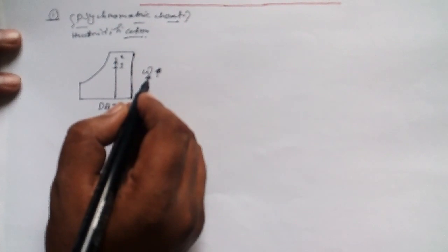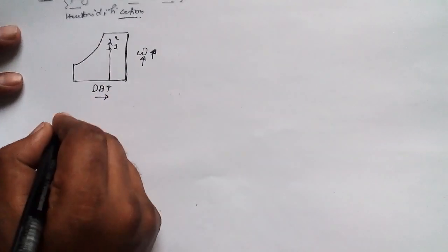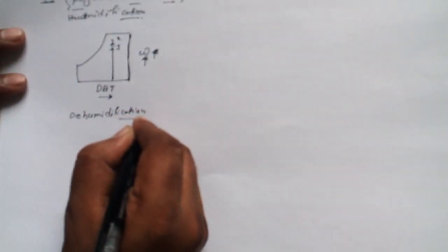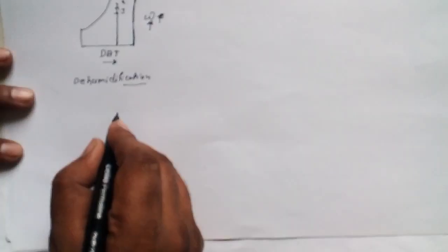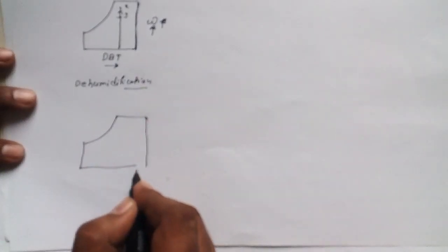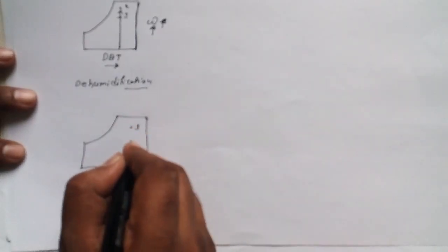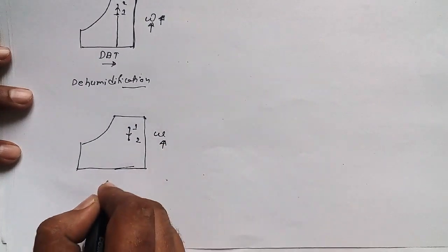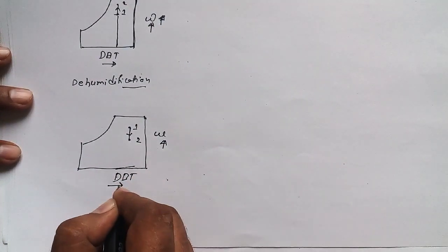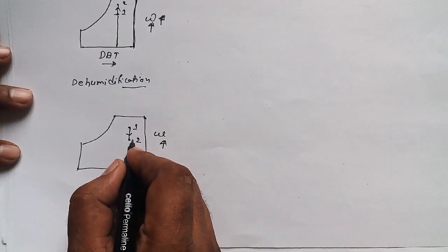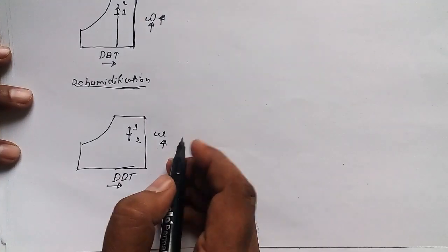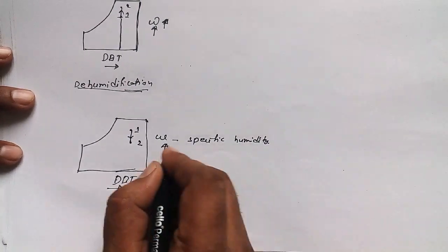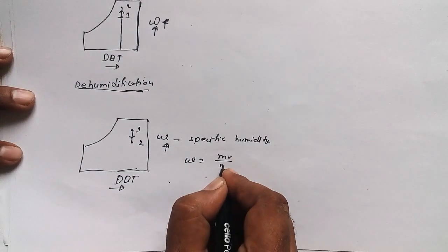Now if we are thinking about dehumidification, I'm going to draw a diagram for this. Point one and point two — if there is a decrease in specific humidity but dry bulb temperature is constant, that is known as dehumidification.